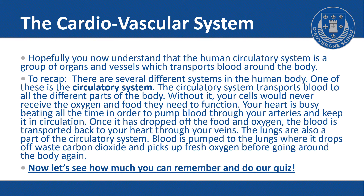The human circulatory system is a group of organs and vessels which transports blood around the body. To recap, there are several different systems in the human body. One of these is the circulatory system, which transports blood to all the different parts of the body. Without it, your cells would never receive the oxygen and food they need to function. Your heart is busy beating all the time to pump blood through your arteries and keep it in circulation. Once it has dropped off the food and oxygen, the blood is transported back to your heart through your veins. The lungs are also part of the circulatory system — blood is pumped to the lungs where it drops off waste carbon dioxide and picks up fresh oxygen before going around the body again.